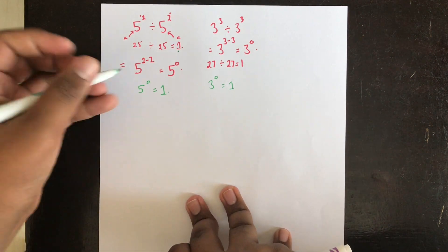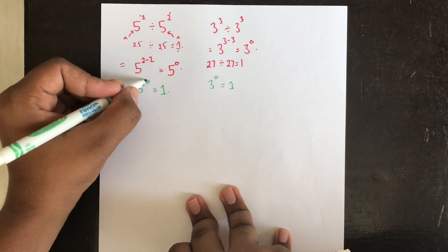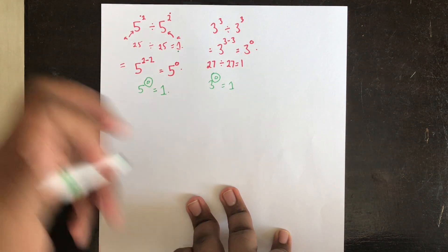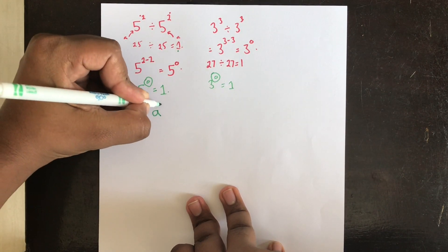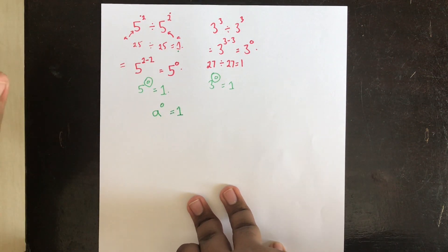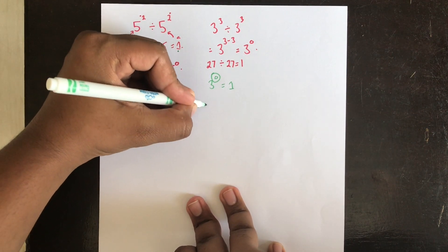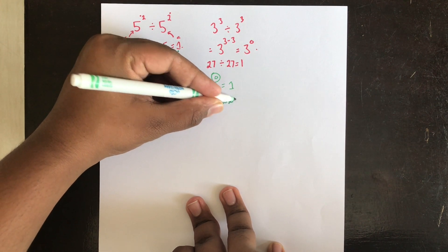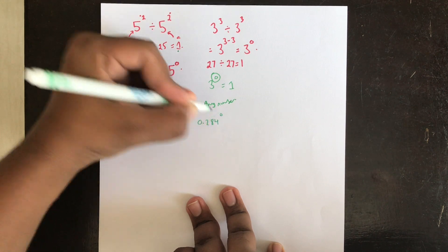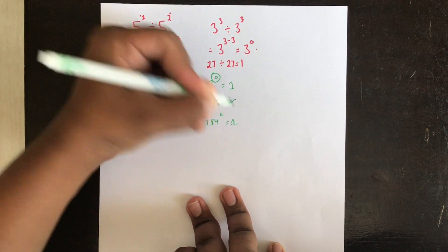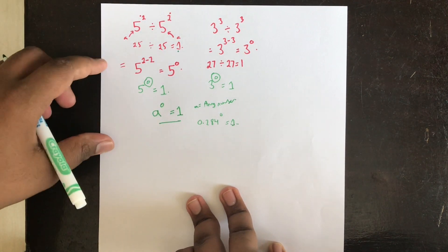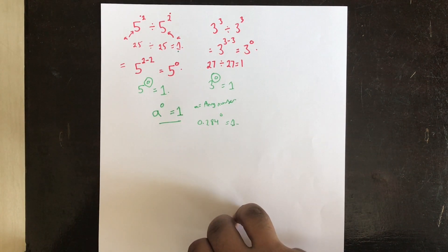Any number to the power 0 is going to equal 1. So the formula is: a power 0 equals 1, where a can be any number. Even something like 0.284 to the power 0 will still give 1. Anything to the power 0 is always 1.